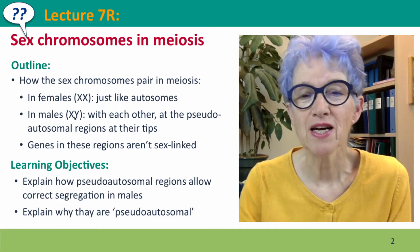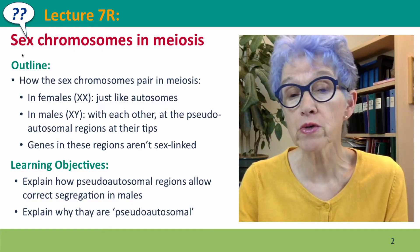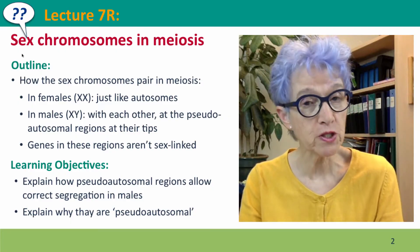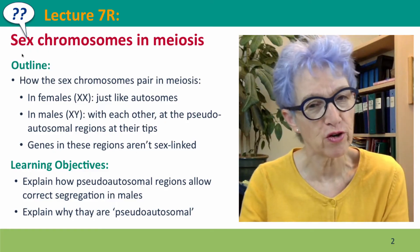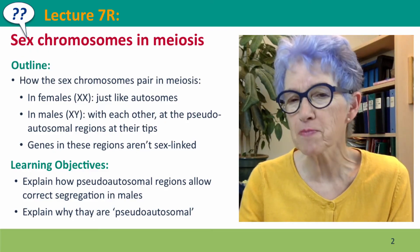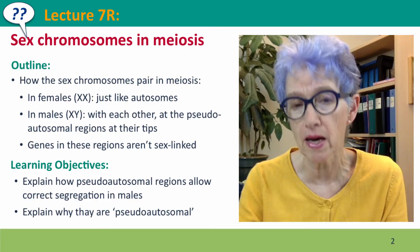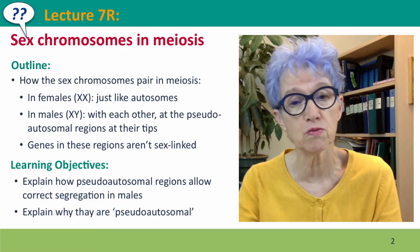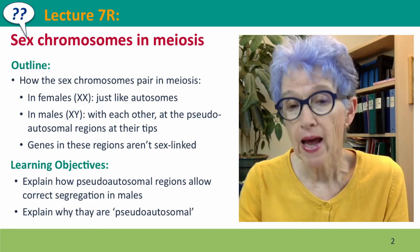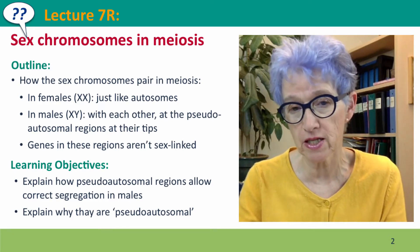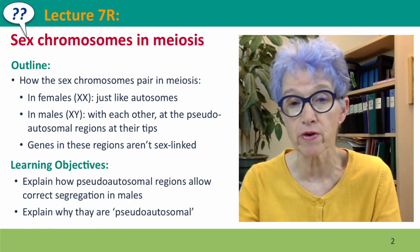Hi, everyone. Welcome back to Lecture 7R, the last lecture of Module 7. Here we're going to talk about what happens with the sex chromosomes in meiosis. The basic principles that we learned about how meiosis works don't easily apply to the sex chromosomes, but the sex chromosomes have found a very clever way to solve this problem, and this has created some interesting implications for the genes that we inherit on the X and Y chromosome from our mother and from our father.